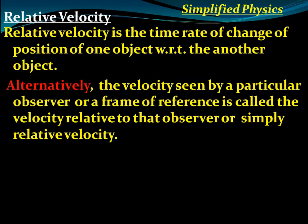Suppose a passenger on bus A is observing the passenger on bus B. What will be the velocity observed by the person on bus A with respect to the person on bus B? Since both buses travel in the same direction with the same velocity, the relative velocity of the passenger on bus A with respect to bus B is zero.